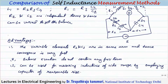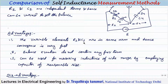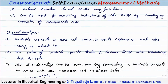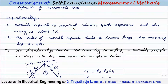The advantage of the Owens bridge is that the variable elements R2 and C2 are in the same arm, giving very fast convergence compared to other methods. The balance equation contains no frequency term and the bridge can measure inductance over a wide range with a variable capacitor of reasonable size. However, the variable capacitor is expensive and not highly accurate — accuracy is around 1%.